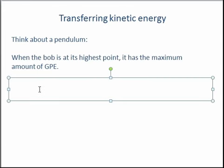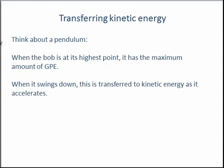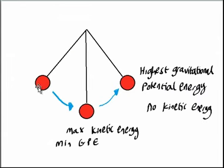Then as the bob swings down, this GPE is transferred into kinetic energy because the bob was stationary here for a moment and now it is moving in a downwards direction. When it is at the bottom, it has the maximum amount of kinetic energy because as it moves, it accelerates, and this is the point at which it has peaked its acceleration.